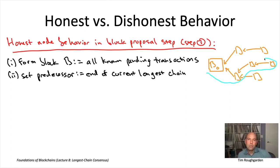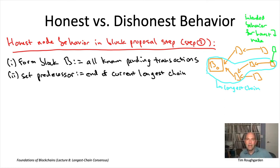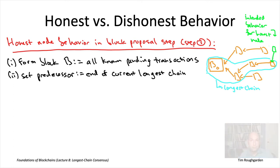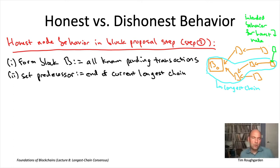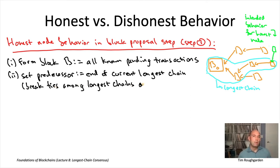For the predecessor, the honest node looks at its known in-tree and finds the longest chain — the largest number of hops from the genesis block — and adds its block to the end of that longest chain. In the orange in-tree on the right, the longest chain is three hops long; an honest node would tack its block onto the end, making it even longer.